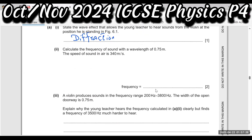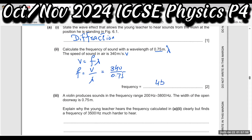Calculate the frequency of the sound with a wavelength of 0.75 m. The speed of sound is 340 m/s. Using the wave equation: speed = frequency × wavelength, so frequency = speed / wavelength = 340 / 0.75 = 450 Hz. Units are important — the unit is hertz.